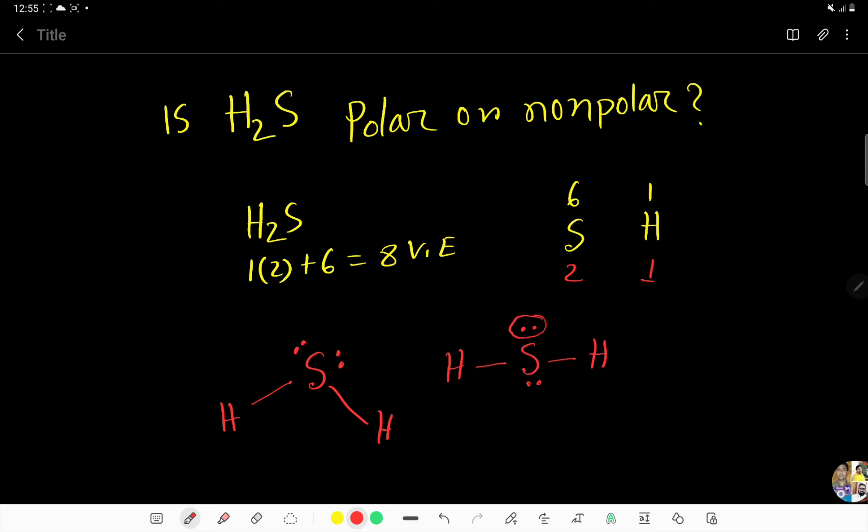To determine hybridization, I have to find out the electron region. Here 1, here 2, here 3, here 4. That is, its electron region or steric number is 4. Means, it will be sp3 hybridized.